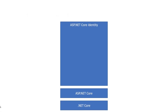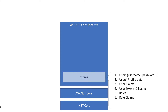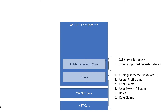ASP.NET Core Identity is an open source framework for securing ASP.NET Core applications. It's a claims-based framework that enables managing and storing users, passwords, claims, tokens, and roles in a persisted store. The default and common persisted store is a SQL Server database using Entity Framework Core. Other types of stores are supported by the community, like MongoDB, Firebase, and others.